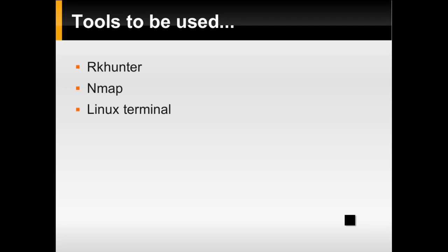RKHunter is an easy-to-use tool which checks machines running Unix, Linux, BSD, and other operating systems for the presence of rootkits and other unwanted tools. RKHunter can be run as a cron job or from the command line when needed. A bash shell or cron shell is required. If available, Perl modules will be used to replace some default system commands. The following system areas will be checked by RKHunter.